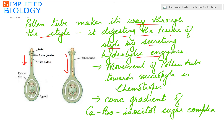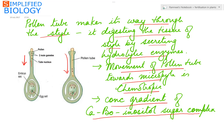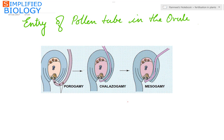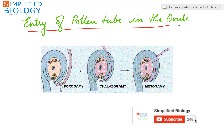The movement of the pollen tube towards the micropyle is chemotropic, meaning attraction towards chemicals. A concentration gradient of calcium, boron, inositol, and inositol-sugar complex directs the pollen tube towards the micropyle.